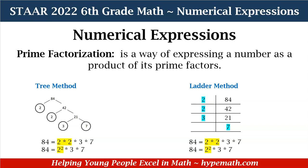Let's look at the tree method on the left-hand side. We are finding the prime factorization for 84. We have 2 times 42, which is equal to 84. Since 2 is a prime factor, we are going to focus on 42. 2 times 21 is equal to 42. 2 is a prime factor — that is why it's circled.